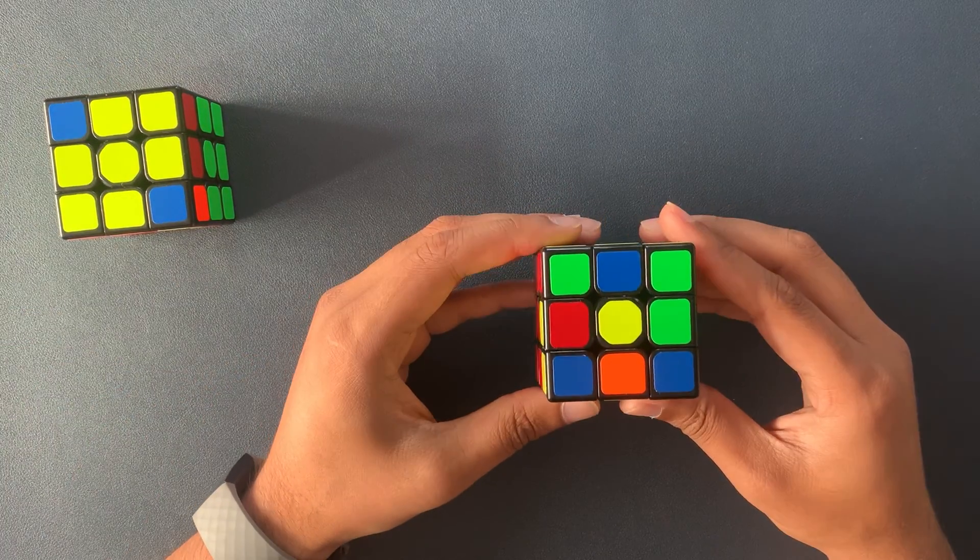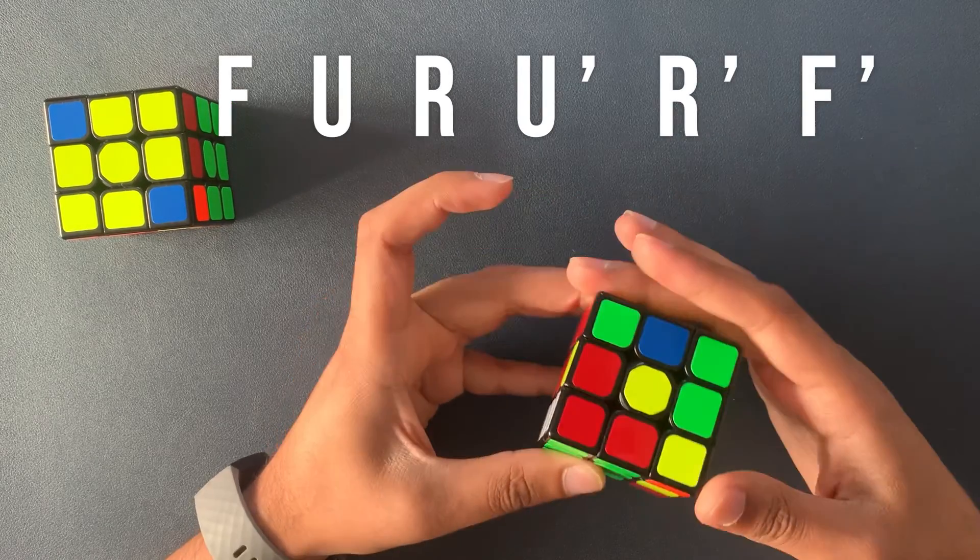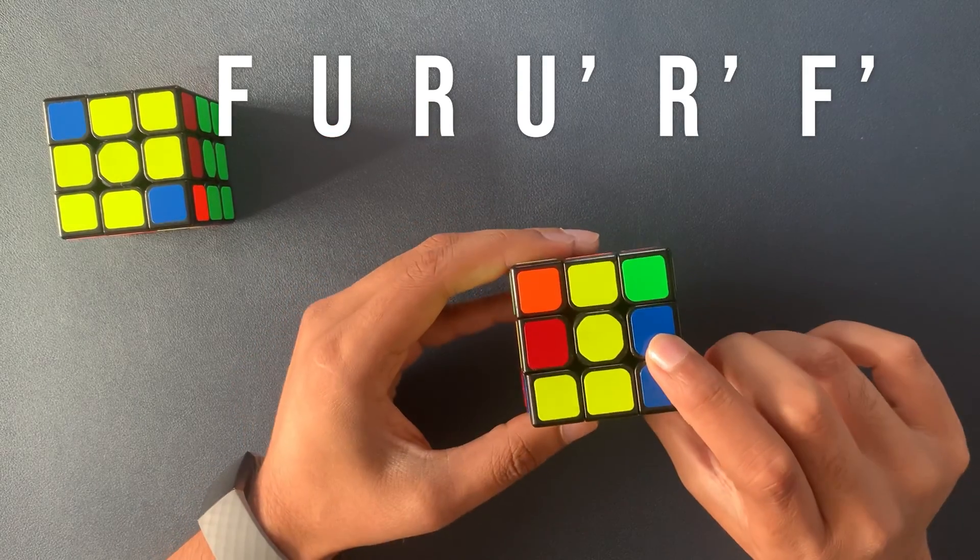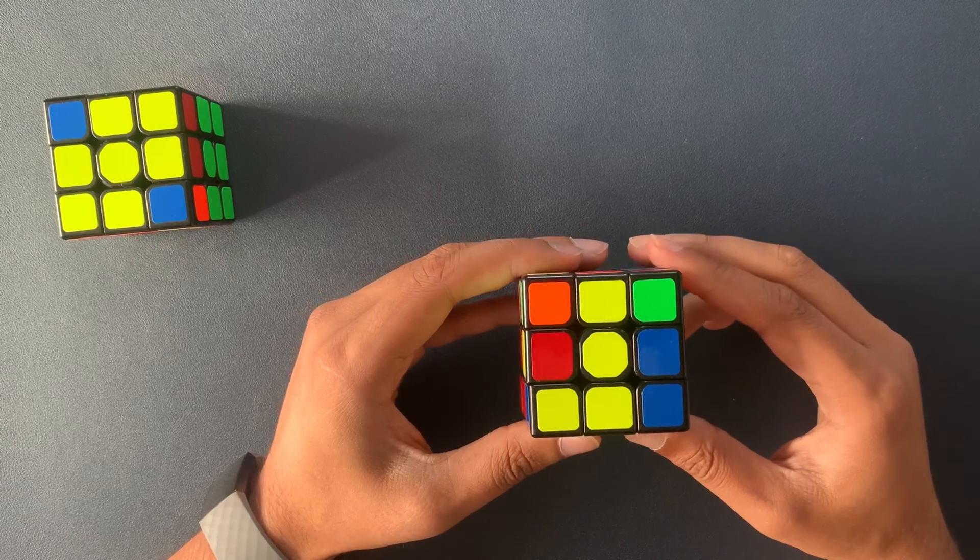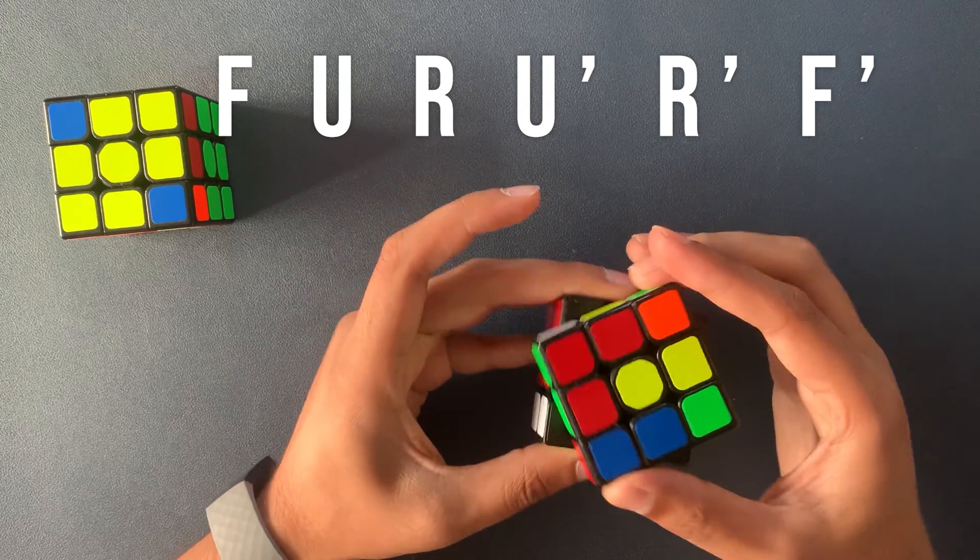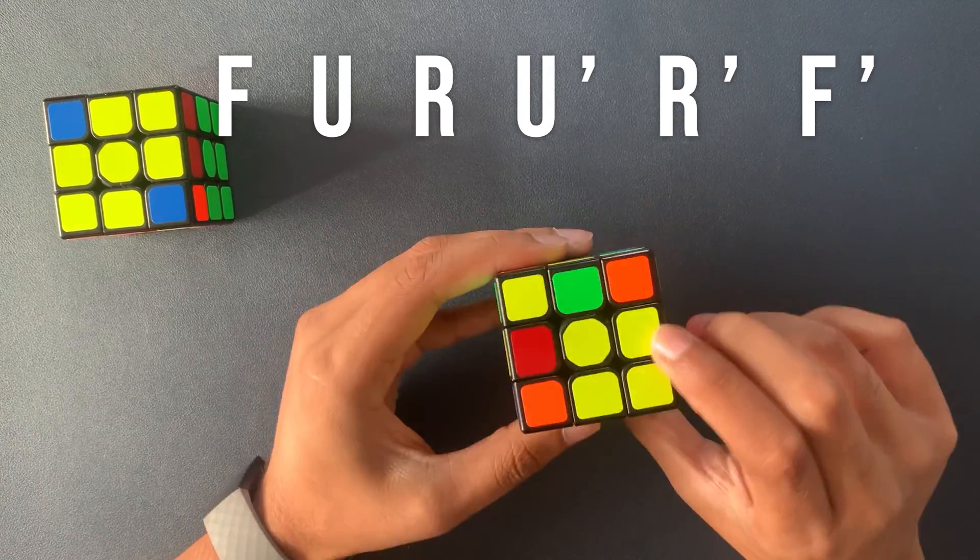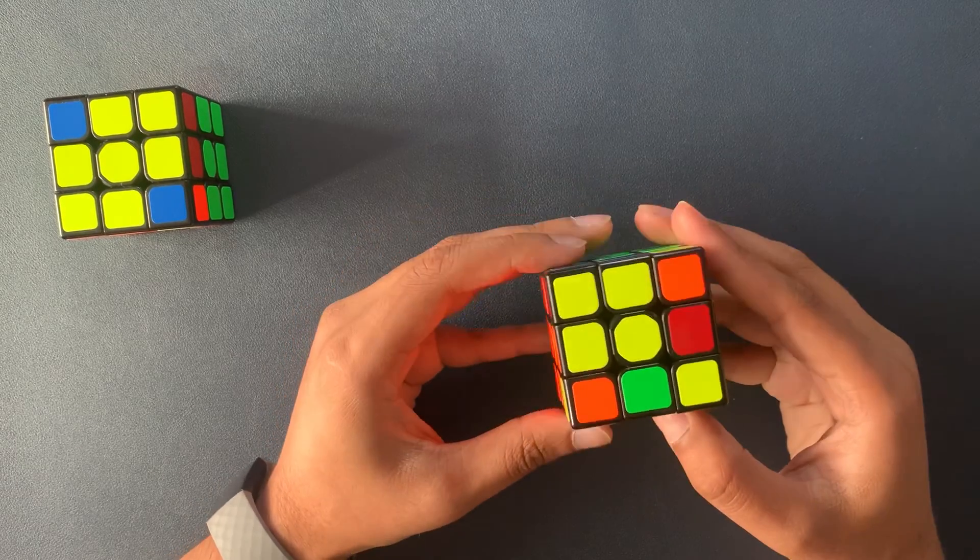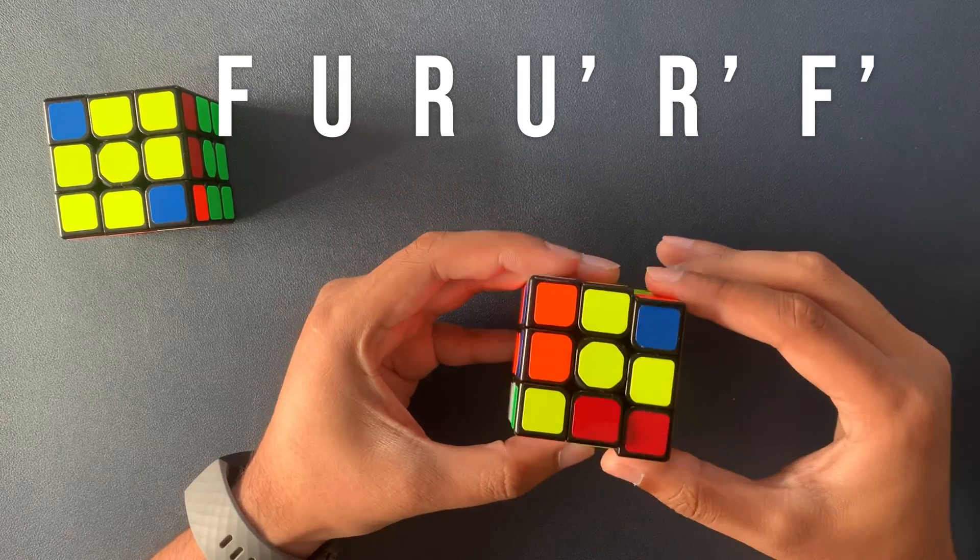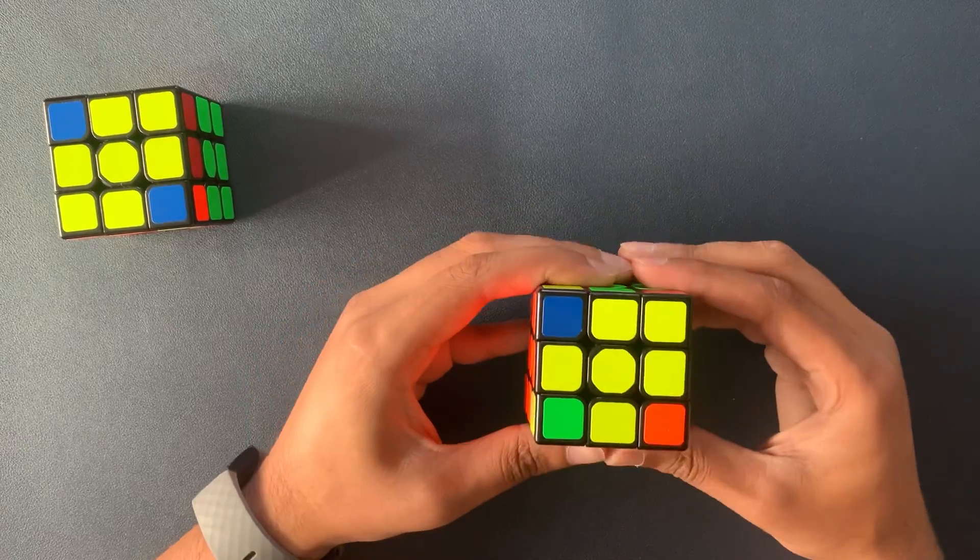Here again it doesn't really matter how you hold it. You've just got to do the moves a couple of times. So let's start. F U R U' R' F'. Here we go. Did it once. I've not got the pieces in the position. Let's do it again. F U R U' R' F'. Here we go. Turn them in the right direction. One more time. F U R U' R' F'. And here we go. We've got our yellow cross.